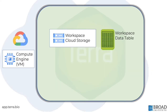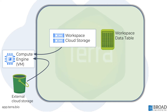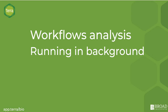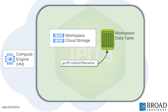When you run a workflow, Terra sets up a Google Compute VM to run the analysis. The VM can pull input file IDs and locations directly from your workspace data tables and bring the data from wherever it is stored into the VM to process. Terra takes care of executing the workflow code in the background. When the job is complete, the VM saves output files to workspace storage and writes the file locations to the data table.